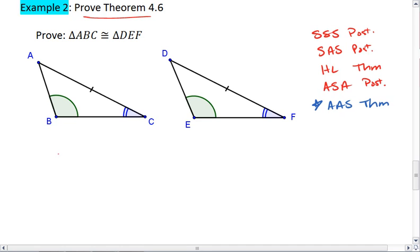So, looking at my drawings, I'm given two angles and a non-included side are congruent to two angles and the corresponding non-included side of the second triangle.